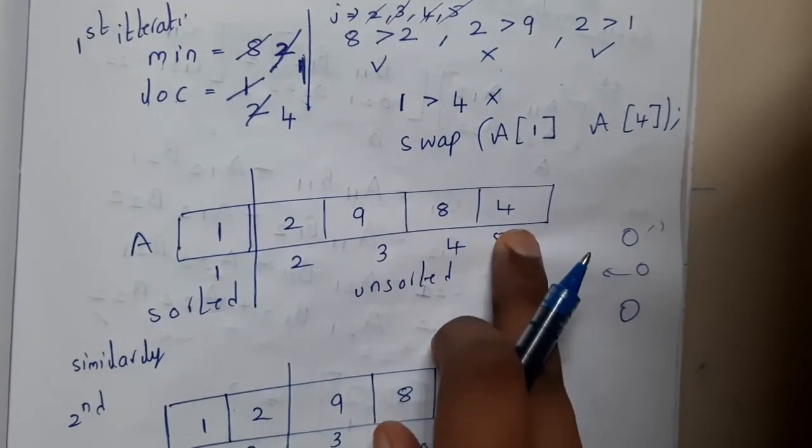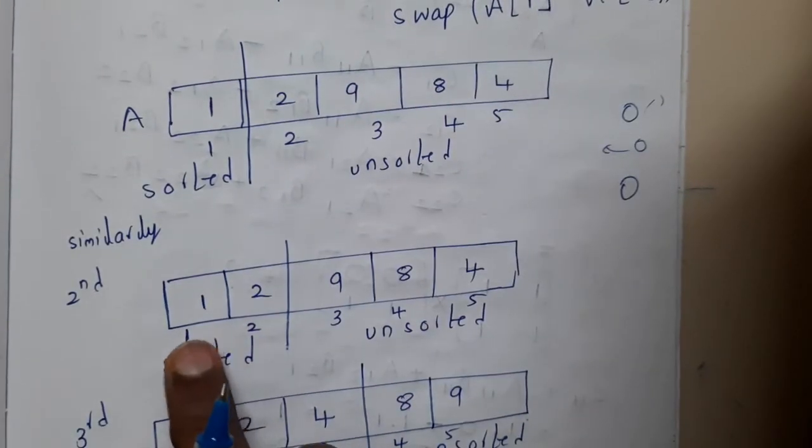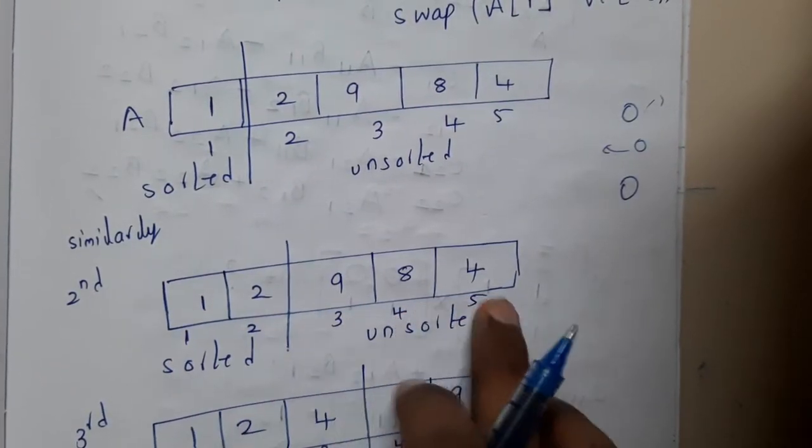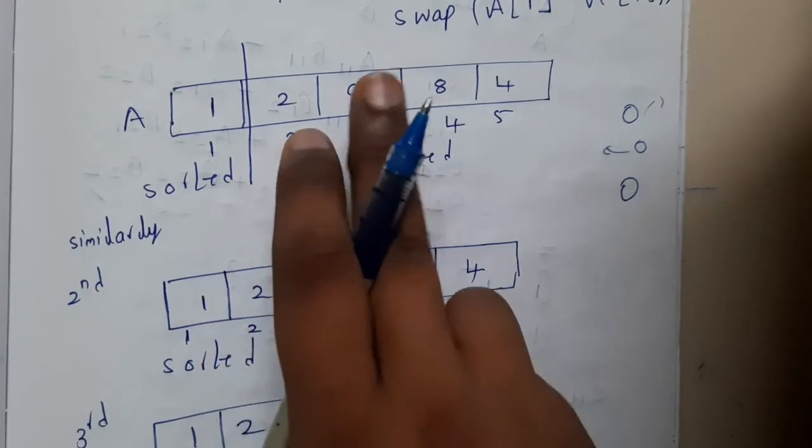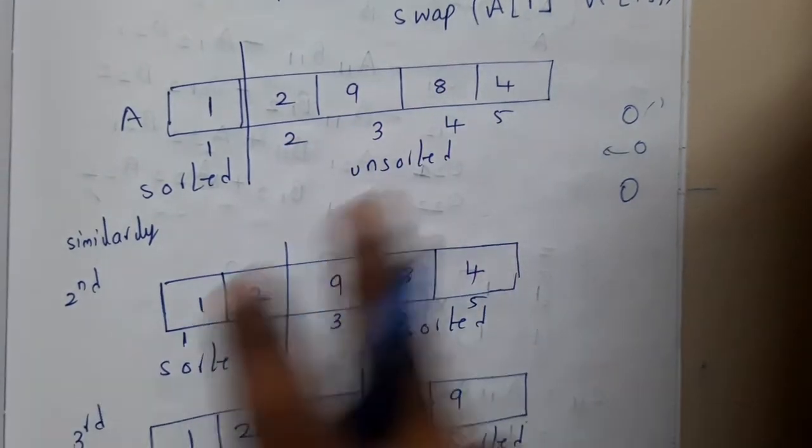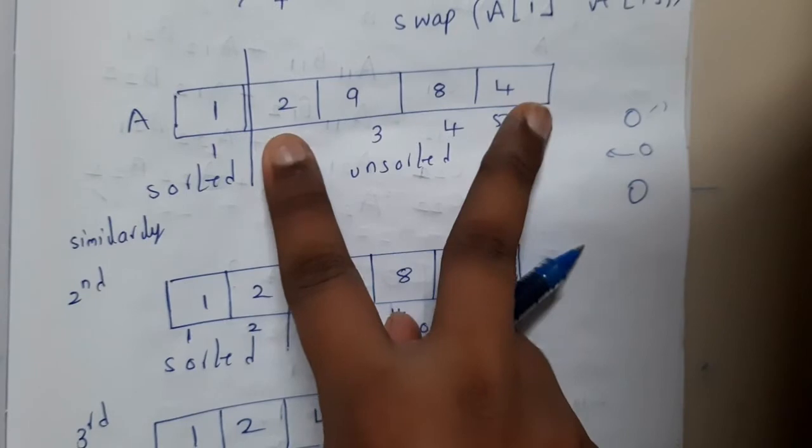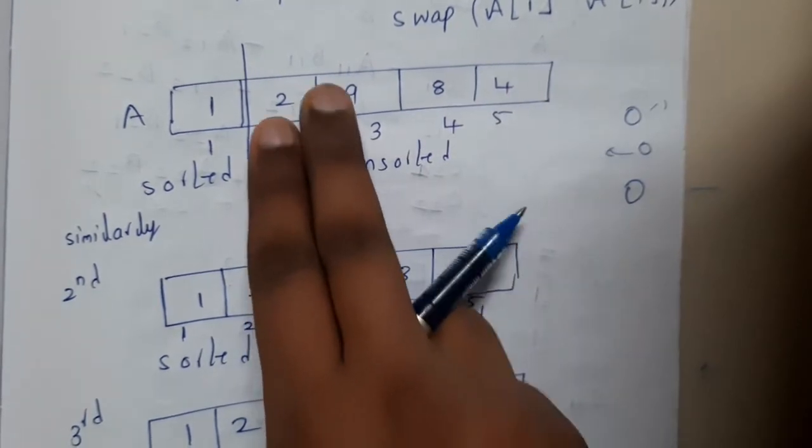Similarly, if you continue: 1, 2, 9, 8, 4. The second element is already in its position, but you will be checking it again. There is no chance for this to move anywhere, so it stays there.